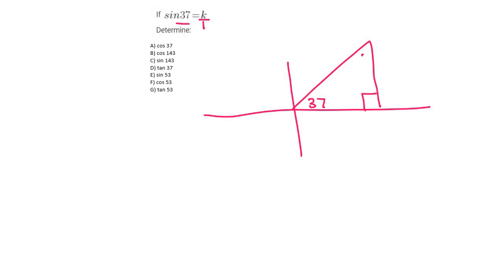My advice would be to always try to find this angle by just using sum of angles in a triangle, and that's going to be 53. Now sin is opposite over hypotenuse. You then use Pythagoras to find the missing length and it's going to be 1 minus k squared, or square root of 1 minus k squared, which is not the same as 1 minus k. A lot of students think that; it's not the same. You leave it just like that.